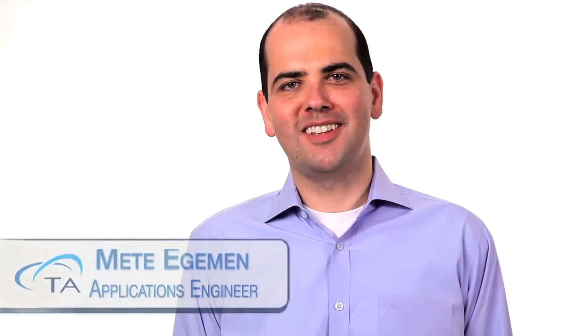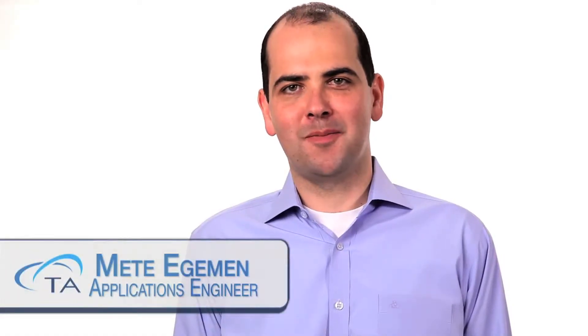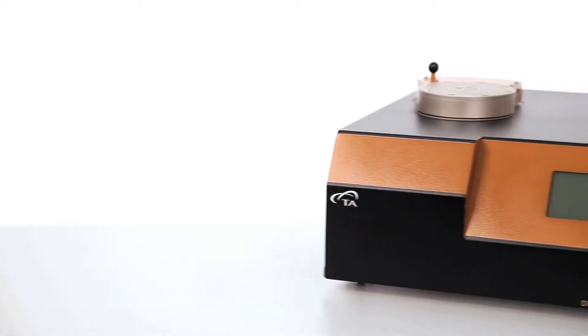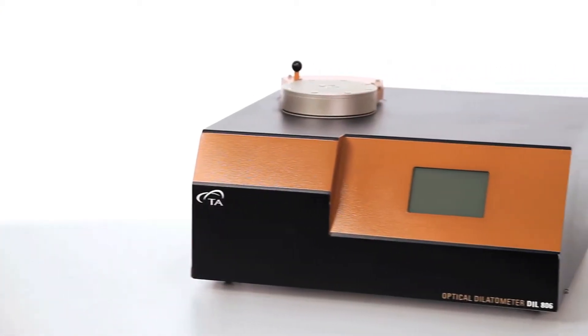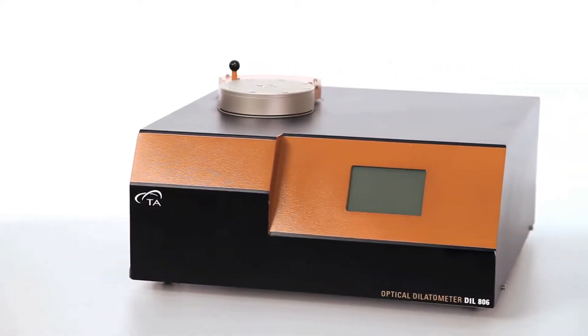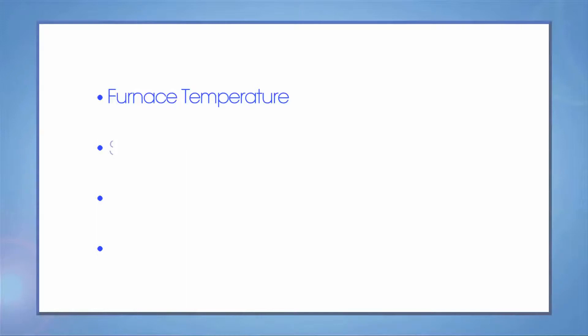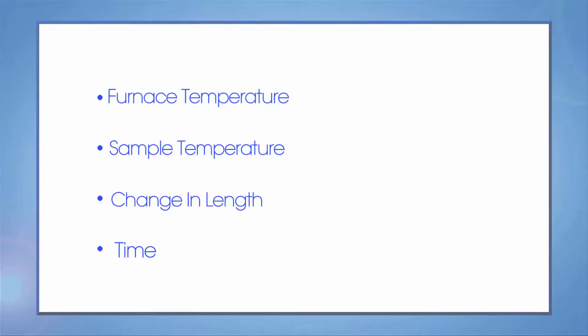Hello, welcome to another TA Tech Tip. In this Tech Tip, we will discuss the post analysis options for WinTA software for dilatometers. All TA dilatometers measure four variables: furnace temperature, sample temperature, change in length, and time. Everything else is calculated using these four variables.